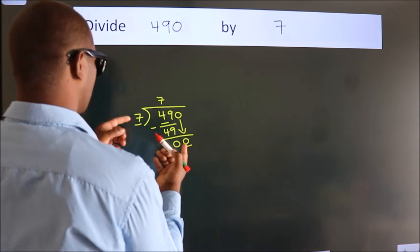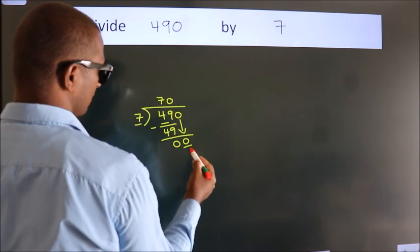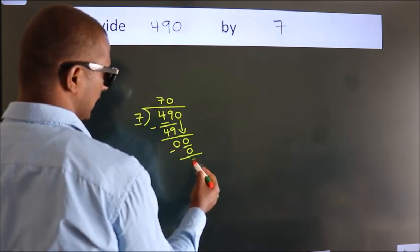When do we get 0? In the 7 table. 7 times 0, 0. Now we subtract. We get 0.